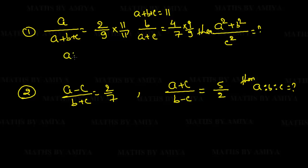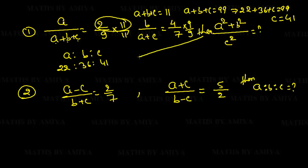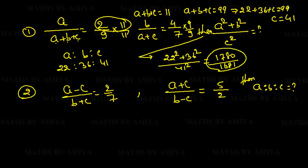This gives A:B:C where A = 22, B = 36. Using A+B+C = 99: 22 + 36 + C = 99, so C = 41. The ratio is 22:36:41. We need to find (A²+B²)/C² = (22²+36²)/41² = (484+1296)/1681 = 1780/1681. This is the answer to Question 1.